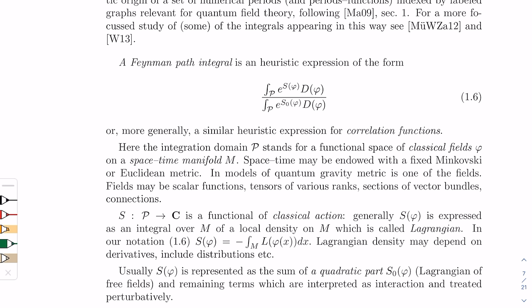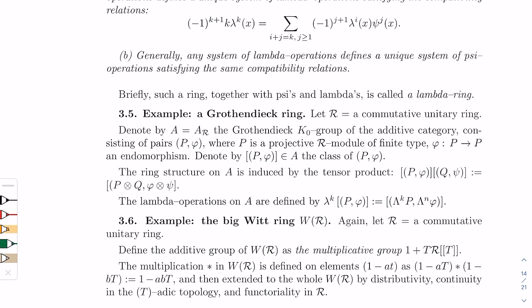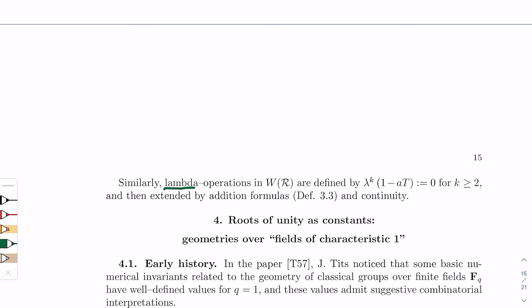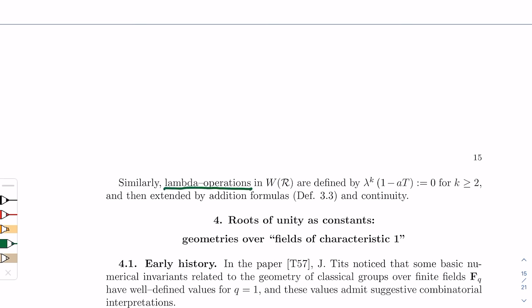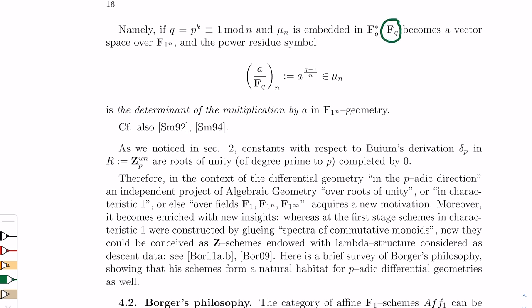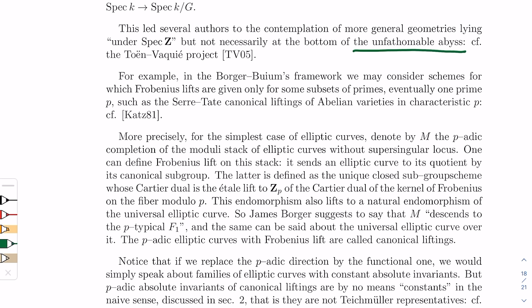Some interesting examples of periods are algebraic numbers — zeros of polynomial equations. The number pi is a period. And then there are these strange numbers you get by applying the gamma function to a rational number — we could call them fractional gamma values. The last few things I want to mention are these Feynman integrals, or Feynman path integrals, connected to amplitudes in quantum field theory. And on page 14, these notions called Grothendieck rings and Witt rings — examples of algebraic structures with something called lambda operations. On page 16, we see something called fq, which is a finite field, and this symbol f1, which is at the heart of this mysterious geometry. Finally on page 18, he uses this phrase: 'the unfathomable abyss.' And I really like this phrase, because it conveys something of the depth you feel that you encounter in this space of ideas.